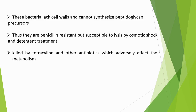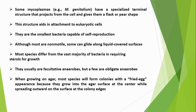They are killed by tetracycline and other antibiotics which adversely affect metabolism. Some Mycoplasmas, for example Mycoplasma genitalium, have a specialized terminal structure that projects from the cell and gives them a flask or pear shape. This structure aids in attachment to eukaryotic cells.